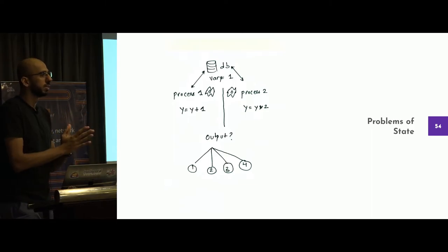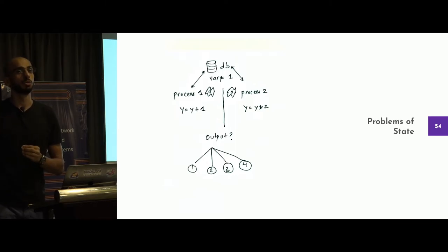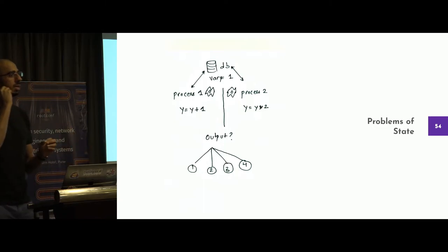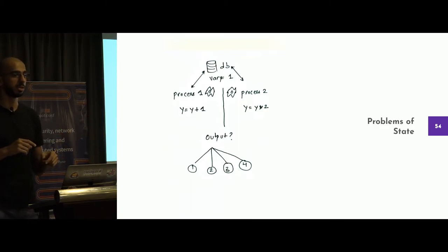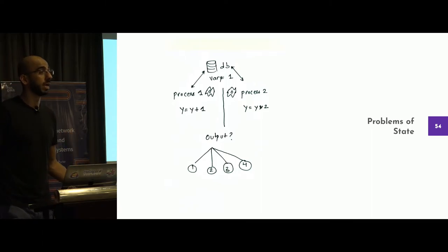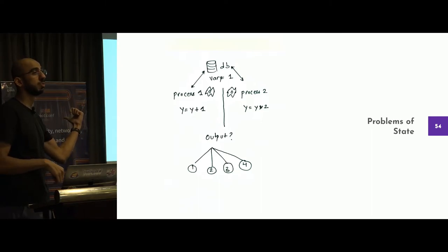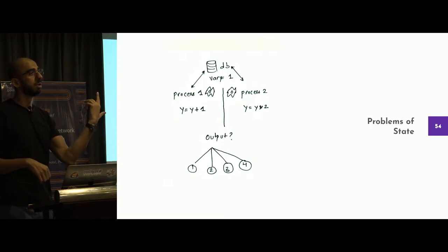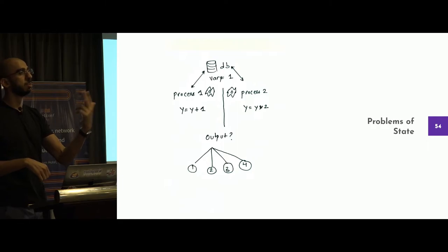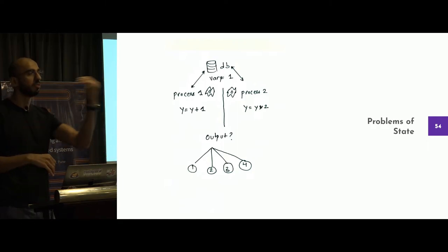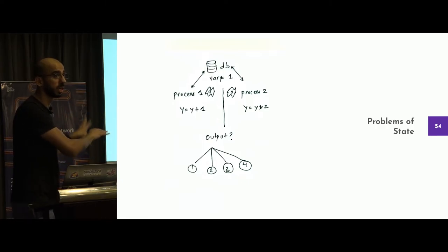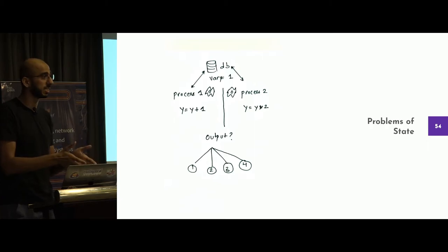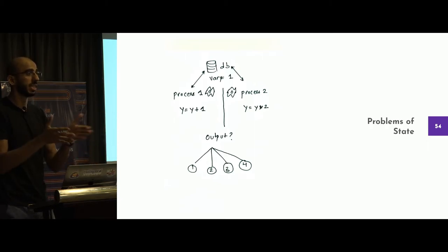There are two processes: var y equals 1, one process does y = y + 1, another does y = y * 2. What are the possible outcomes? Should it be 1, 2, 3 or 4? The answer could be anything. Y = y + 1 and the other fails — you get 2. Y = 1, y * 2 and the first one fails — the answer is 2. Both fail — y remains 1. Both happen in order: first y + 1 then multiply by 2 — answer is 4. What about 3? 1 * 2 happens first and then you add 1. All of these are possible states in a distributed system and there is nothing wrong with them. They are all right states. It depends on how you serialize them.